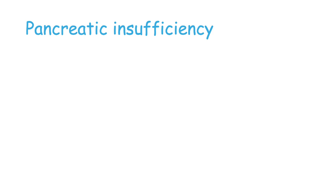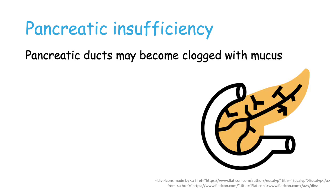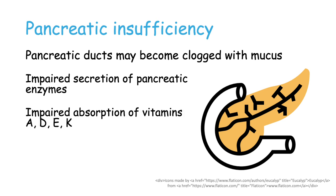Cystic fibrosis is a multi-system disease, and the majority of patients also suffer from pancreatic insufficiency. This is caused because the pancreatic ducts may become clogged with mucus, leading to impaired secretion of pancreatic enzymes. This in turn leads to difficulty absorbing nutrients, namely protein, fat, and vitamins A, D, E, and K.